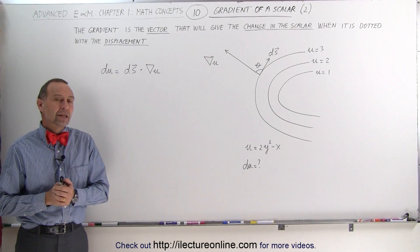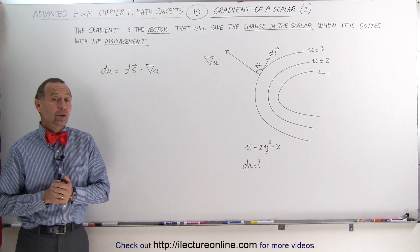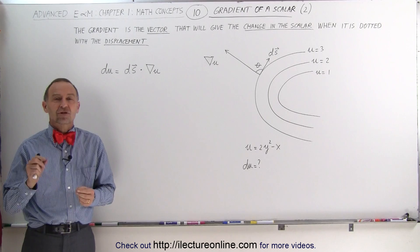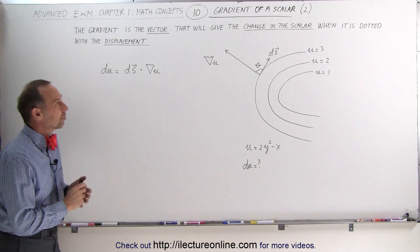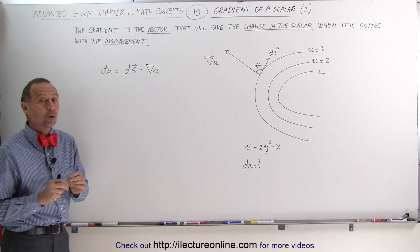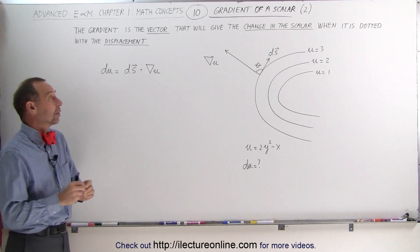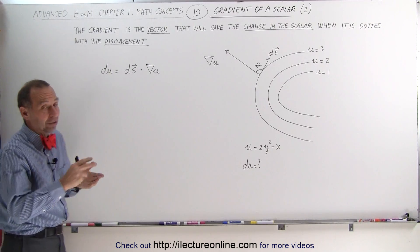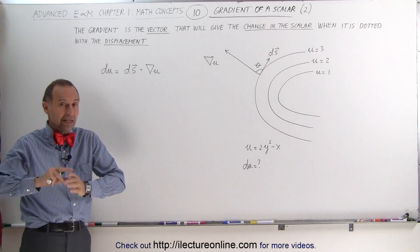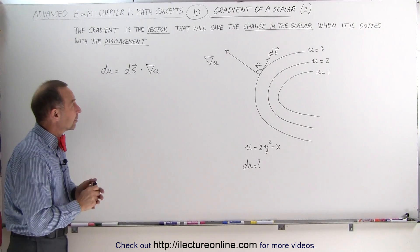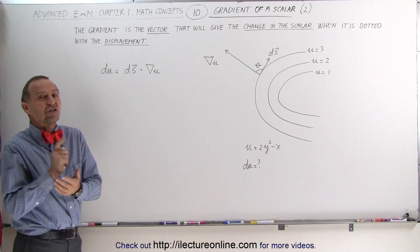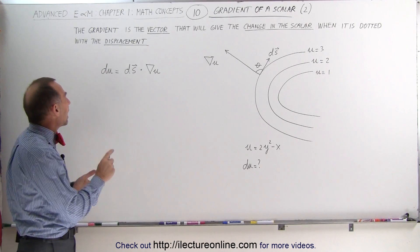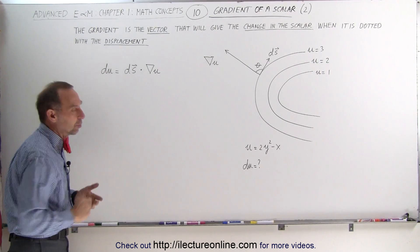Welcome to ElectronLine. Now we're going to look at the gradient of a scalar in a slightly different way. Here we're going to see what we can also do with the gradient. It turns out that the gradient is a vector — and remember, the gradient is indeed a vector — that will give the change in the scalar when it is dotted with the displacement.